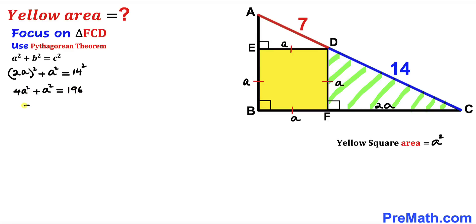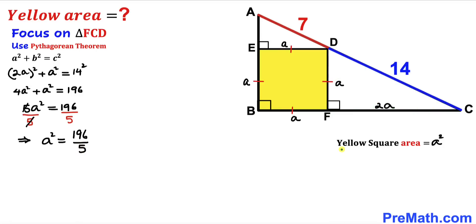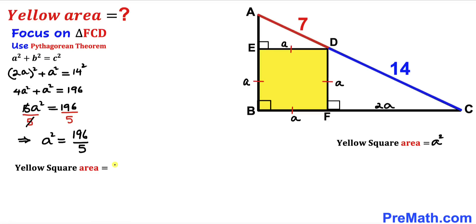Combining like terms on the left side gives 5a squared equals 196. Dividing both sides by 5 to isolate a squared, we get a squared equals 196 divided by 5. Since the yellow square area equals a squared, we conclude the yellow square area is 196 over 5 square units, which in decimal form is 39.2 square units.